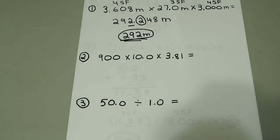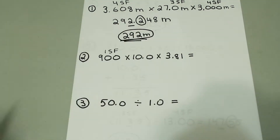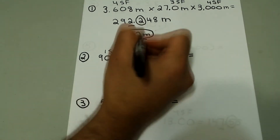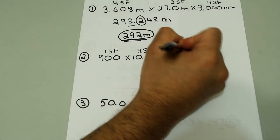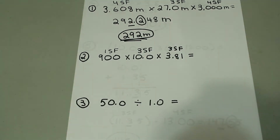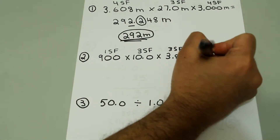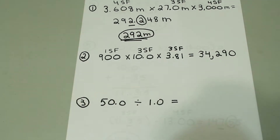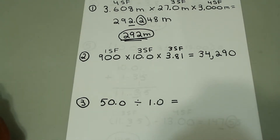Next we have 900 times 10.0 times 3.81. We're going to identify how many significant figures each factor has. 900 has one significant figure since there are no decimal places. 10.0 has three significant figures, and 3.81 also has three significant figures. Going ahead and multiplying these gives 34,290. The lowest number of significant figures is in 900 — that's one significant figure.